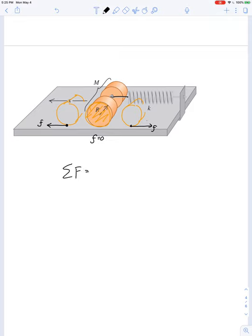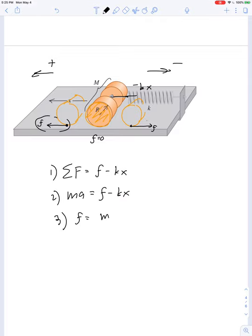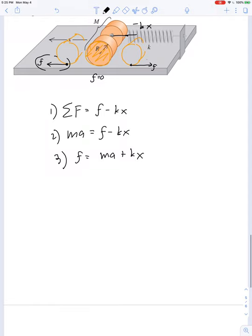Net force is equal to, well, let's see, that's the positive direction, that's the negative direction. The friction force is pulling in the negative direction, and the friction force is pulling in the positive direction. So the net force is friction force minus kx, or ma is equal to friction minus kx, which means our friction force is equal to ma plus kx.